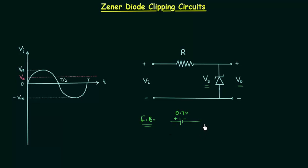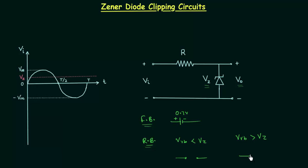The main thing is the operation of the zener diode in reverse bias condition. In reverse bias, the zener diode works as a voltage regulator. When the reverse bias voltage is less than the zener voltage Vz, the zener diode is open circuited. When the reverse bias voltage is greater than Vz, the zener diode is replaced by a constant voltage source equal to Vz.